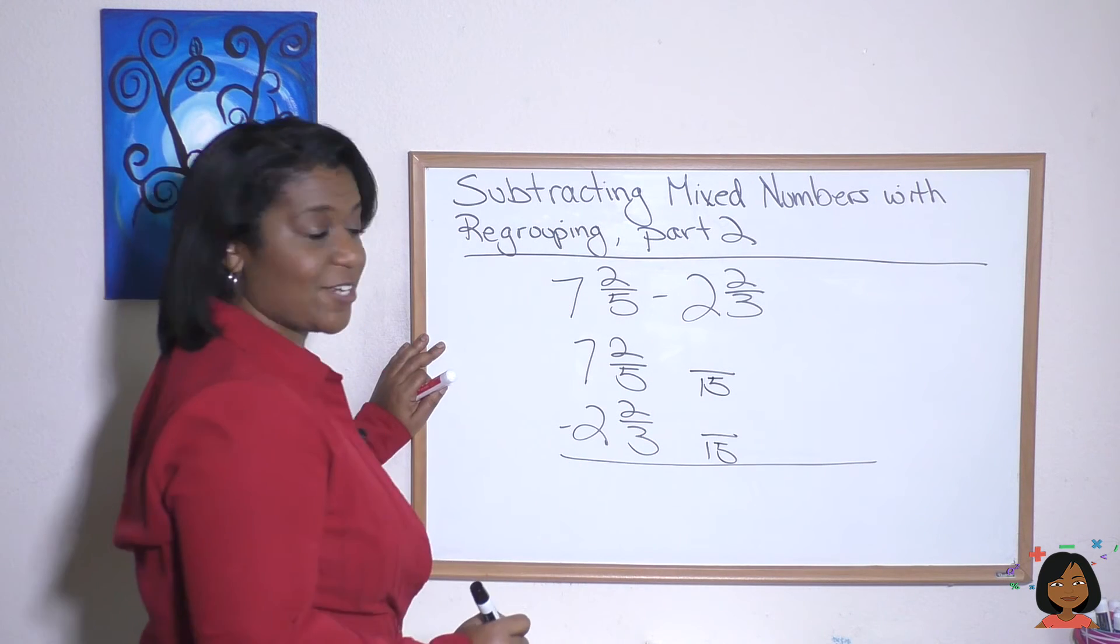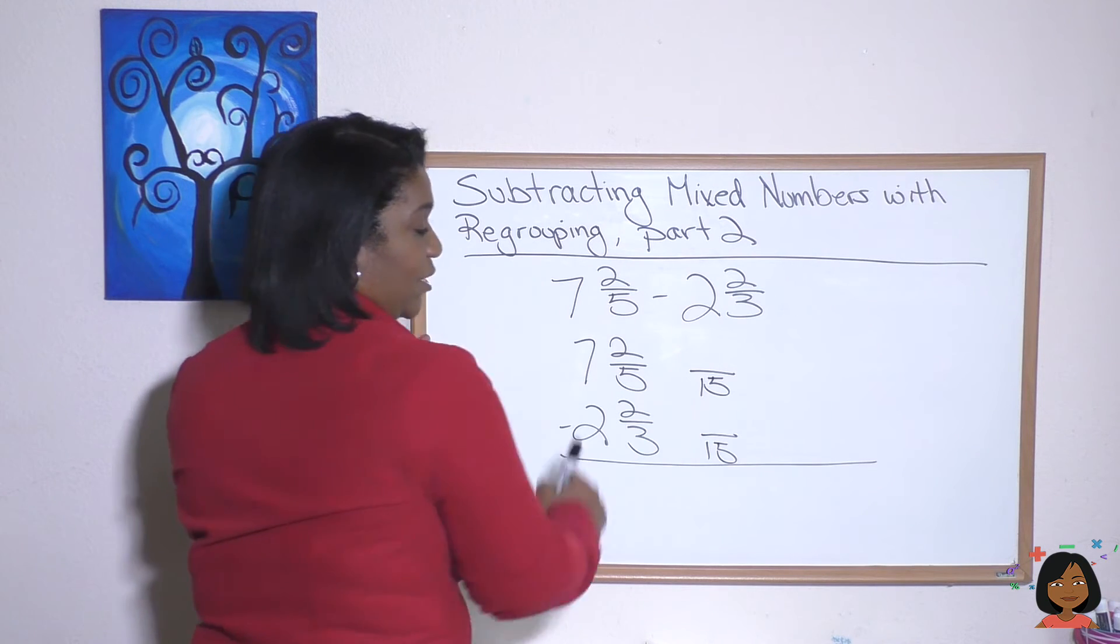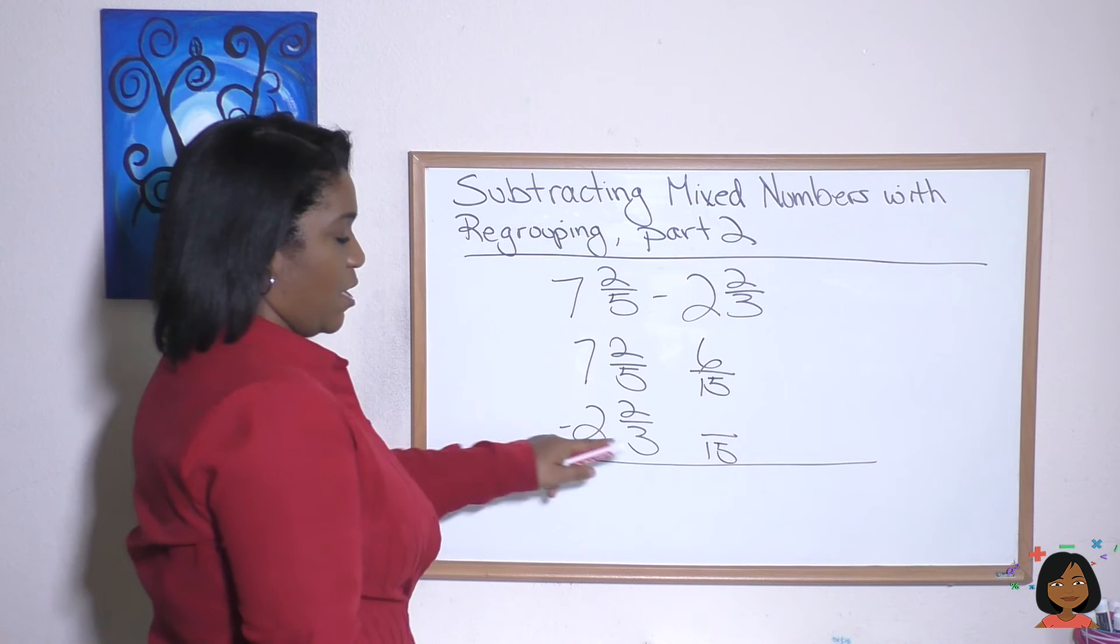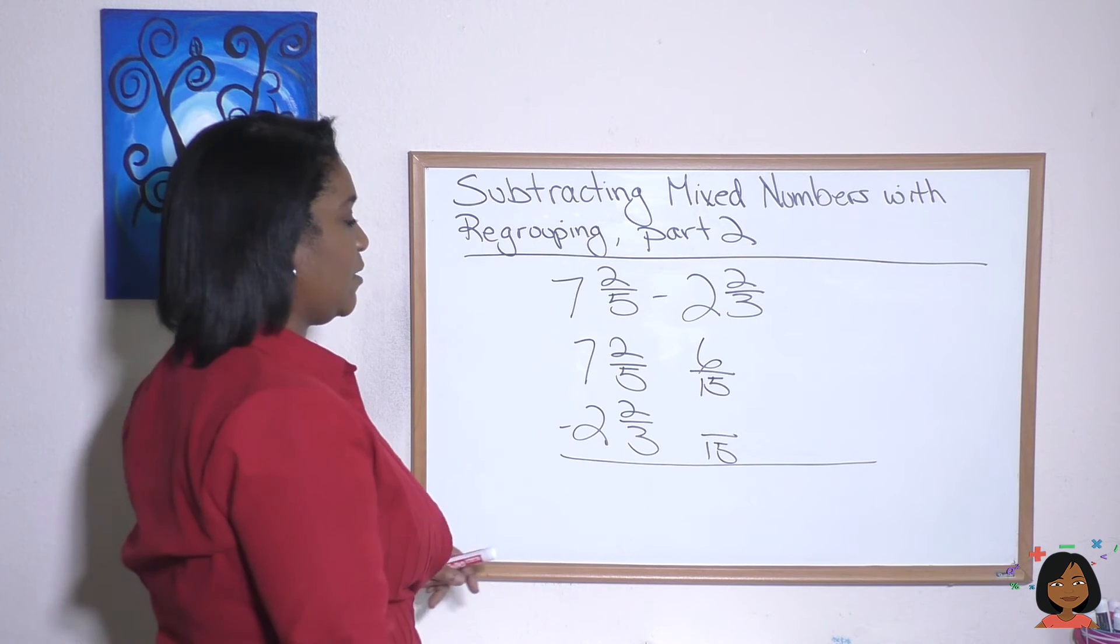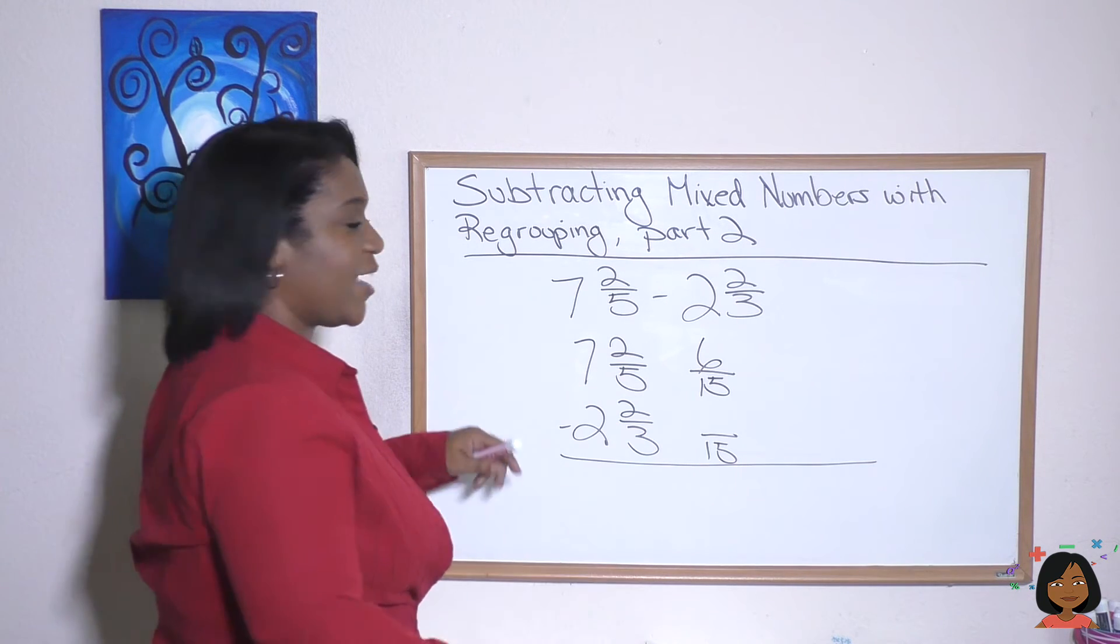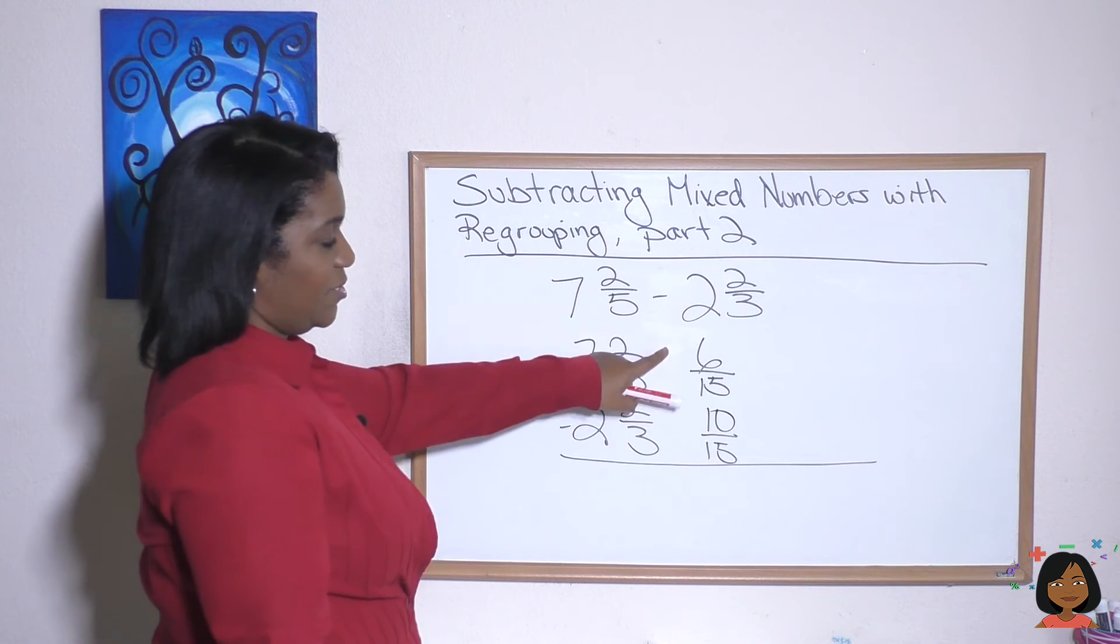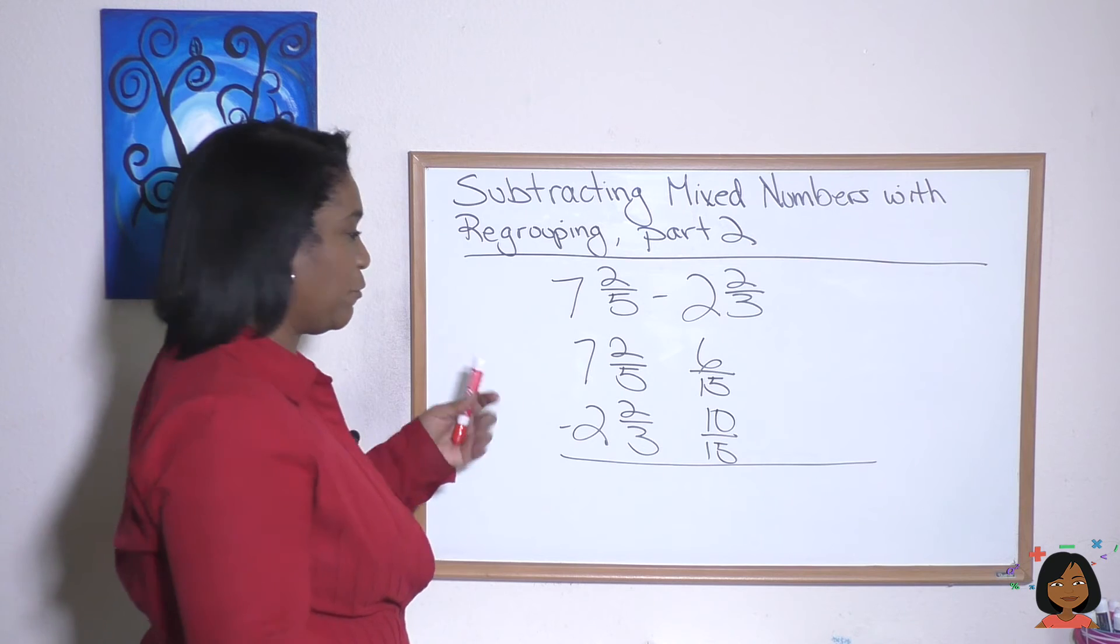And we're going to convert just the fraction piece. Five times three is 15. Two times three is six. Three times five is 15. Two times five is 10. And we can see we've got an issue. Six fifteenths minus ten fifteenths. We're going to have to regroup.